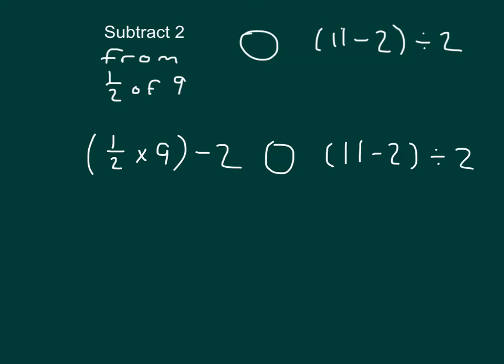Let's evaluate both sides of this expression. We have 1 half times 9, which would be the same as 9 halves, and we're subtracting 2 from that. 9 halves can be written as 4 and 1 half, because 2 goes into 9 four whole times with a remainder of 1, minus 2. 4 and 1 half minus 2: 4 minus 2 is 2, so that's 2 and 1 half.